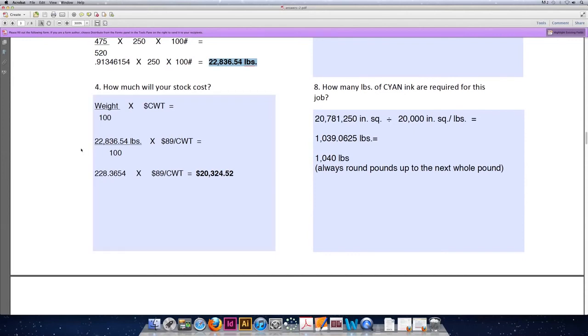We're purchasing 22,836.54 pounds divided by 100. When you divide by 100, you can move the decimal place two spaces to the left. So we'll come up with 228.3654. Do not round any numbers until you get to the very end of your equation. We're going to multiply that by the 100 weight price. And in our example, the 100 weight price is $89 a 100 weight. So 228.3654 multiplied by 89 equals $20,324.52. If you were able to get all four of those questions correct, please move on to the next video and check your answers for questions 5 through 8.